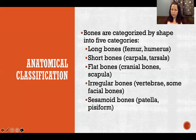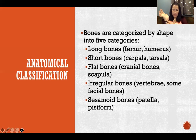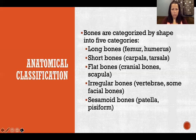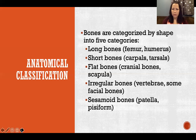Sesamoid bones are bones that are embedded in a tendon. The biggest one in the body is the patella. The pisiform, one of the carpals on the pinky side, is also a sesamoid bone embedded in a tendon. Those are the two sesamoid bones counted in our 206 bones. We actually have several other sesamoid bones in our hands and feet that we don't count in that 206 because they're not as consistent from individual to individual — we have them at the base of the thumb, in different fingers, toes, and the bottom of the feet.